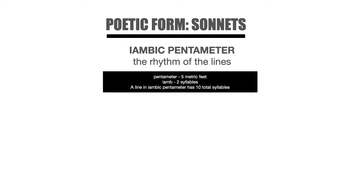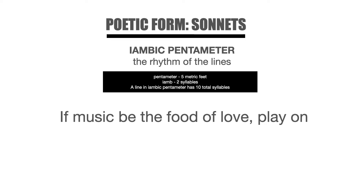Each line of a sonnet is written in iambic pentameter. Iambic pentameter refers to the rhythm of the lines. Basically, each line of the poem has ten syllables, and the syllables alternate between a stressed syllable and an unstressed syllable. Let's look at an example. This is the first line from one of Shakespeare's sonnets. It reads: If music be the food of love, play on.